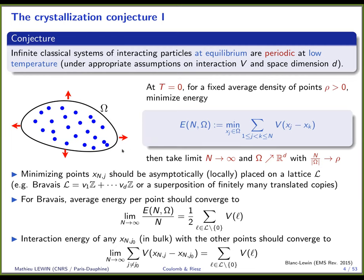You take a domain omega in R^d and put n points in it, with positions x_j. The energy of these n points is the sum over pairs of v(x_j - x_k), where v is a radial function depending only on the distance. You then minimize over the positions of these n points. To see something special, you take the limit n to infinity with omega growing, fixing the density rho = n / |omega|.